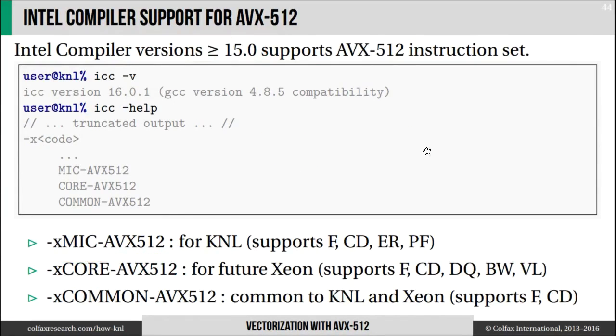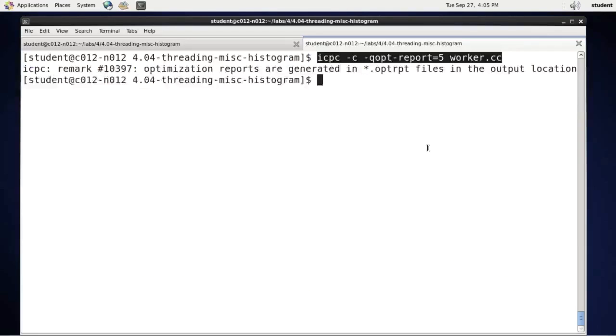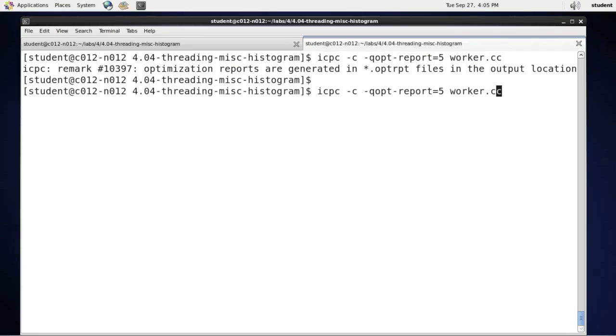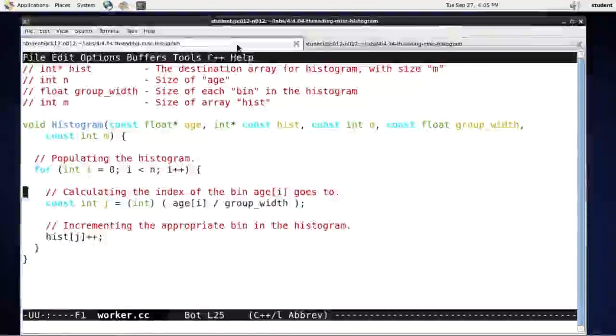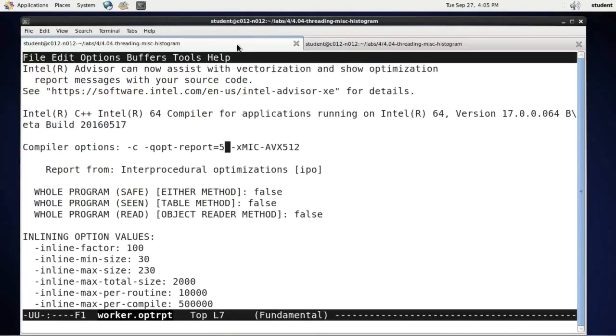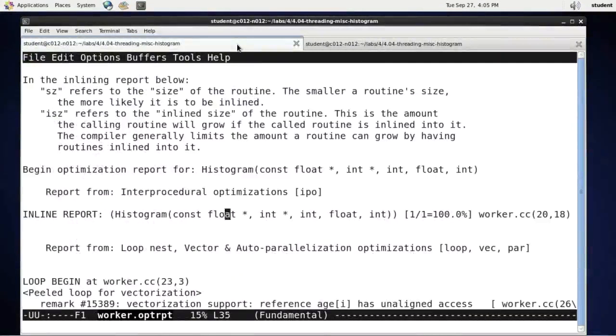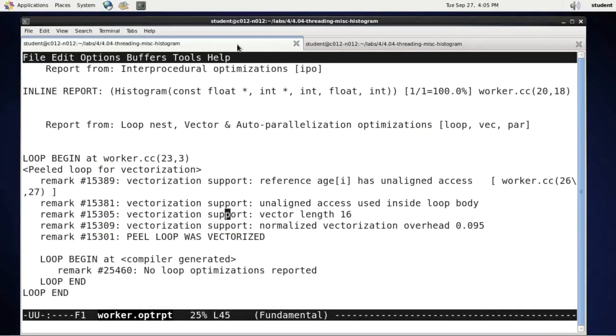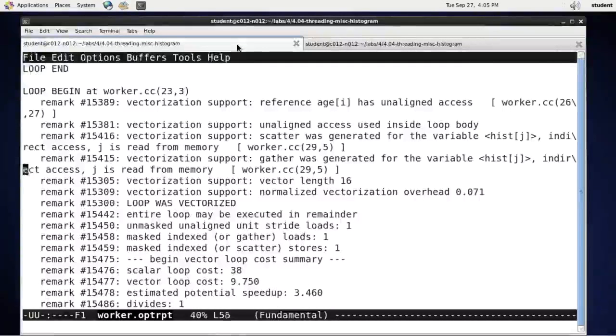Let's test this in action. I will call the same command but I will add to it -xMIC-AVX512, and I will reread the vectorization report. Now in the vectorization report I have very different information. There is information about loop peeling and its vectorization, and down the line here's the main code of the function. Loop beginning in line 23 was vectorized, and that's good news.